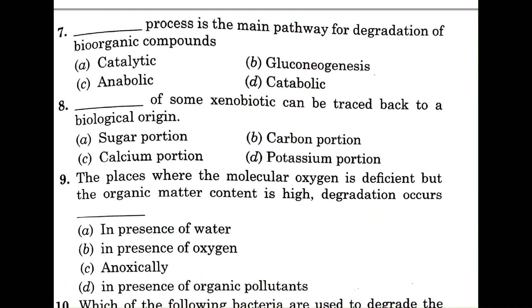Question number seven: which process is the main pathway for degradation of bio-organic compounds? A: catalytic, B: gluconeogenesis, C: anabolic, D: catabolic. The correct answer is D, catabolic. This is a straightforward question.